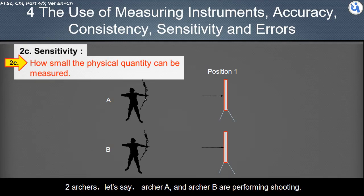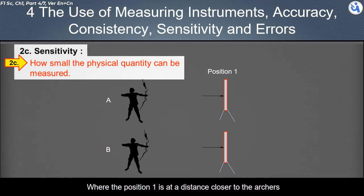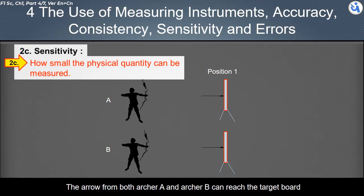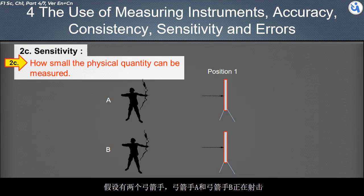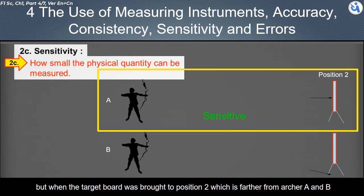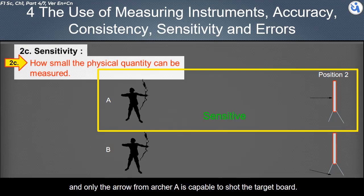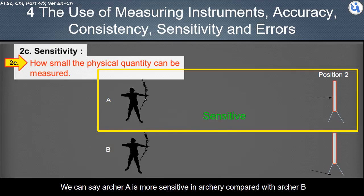Here is an example. Two archers, Archer A and Archer B are performing shooting, at which the target board are placed at position 1, where position 1 is at a distance closer to the archers. The arrow from both Archer A and Archer B can reach the target board. When the target board is moved further to position 2, only the arrow from Archer A is capable to shot the target board. We can say Archer A is more sensitive in archery, compared with Archer B.